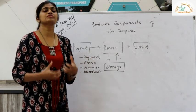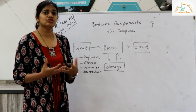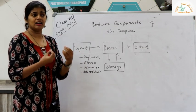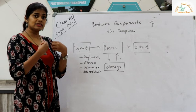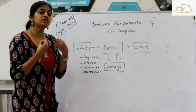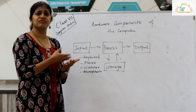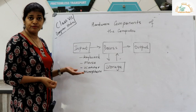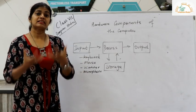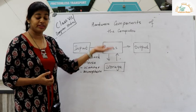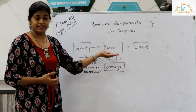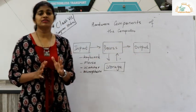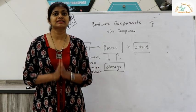Hardware components are the external and internal parts which we can see and touch. Input devices help us to take the input — whatever data we have to give to the computer is given through the input devices. Last class we also discussed various input devices like keyboard, mouse, scanner, microphone, etc. Once the data is given, the computer processes it and then gives us the output. Today's lesson we are going to focus on different output devices.